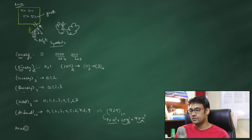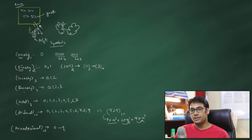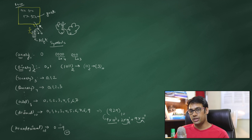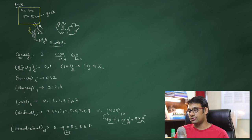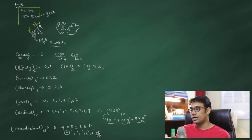We also have the hexadecimal number system. An interesting fact is that we use symbols 0 to 9, but we cannot use 10 as a single symbol because it already uses the digits 0 and 1. So we introduce new symbols: capital A for 10, B for 11, C for 12, D for 13, E for 14, and F for 15, giving us 16 unique symbols in total.